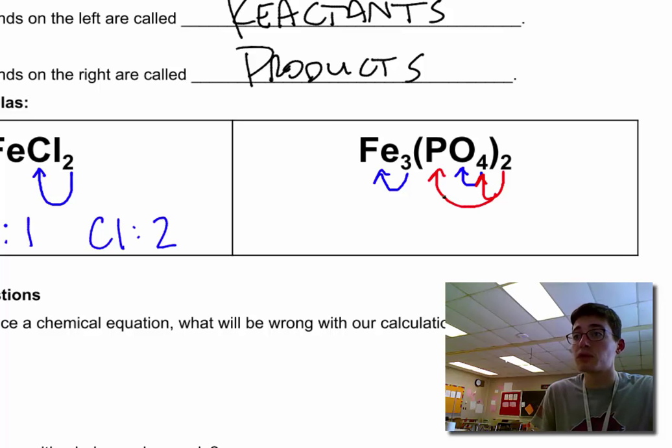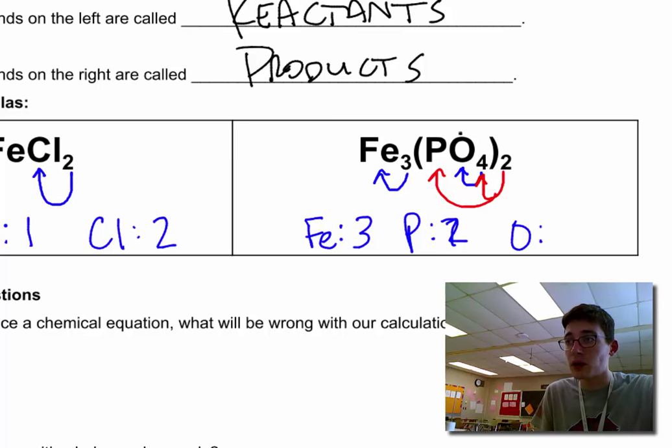I have two of those PO4 groups. So if I'm counting my atoms, Fe, iron, I have three of them. I also have phosphorus here. And if I have two on the outside, I have two groups of PO4s. That means I have two phosphorus. And my oxygen, one group of PO4 has four oxygens. So two groups means I have eight oxygens. So you really got to make sure you know how to count. This is a new thing. We haven't really looked at this.